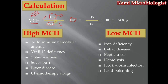For example, if the hemoglobin value is 15 and the hematocrit value is 43, we divide these values and then multiply by 100. The result we get is 34.8 g/dL, which falls within the normal range of MCHC.